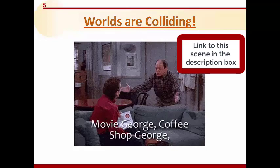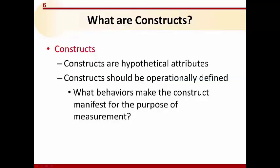I want to quickly define a word I'll use often: constructs. Constructs are hypothetical attributes — they cannot be seen, but there is a general belief that they exist. In education, constructs may be math achievement or reading comprehension. We cannot see these things, so if we want to measure them we give students a test so they can engage in behavior that generates something observable. In psychology, constructs may include depression, anxiety, happiness, and so on.